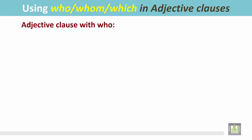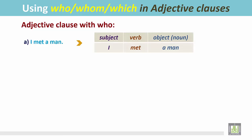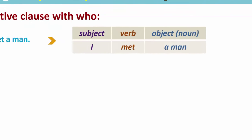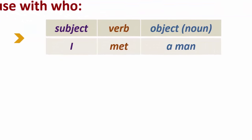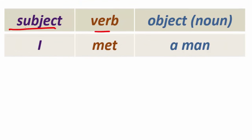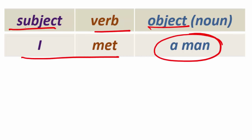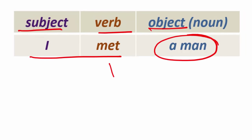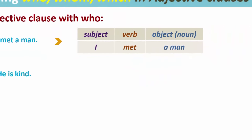Adjective clause with who. See the examples. I met a man. In this sentence, the structure looks like this: the subject, then the verb, and then the object. I met a man — 'a man' is the object for the verb 'met'.